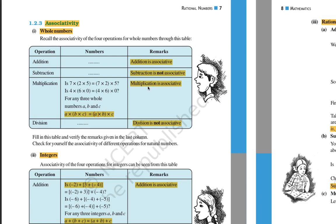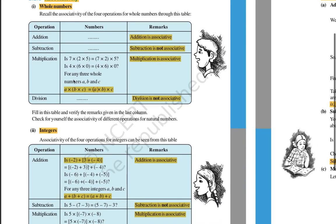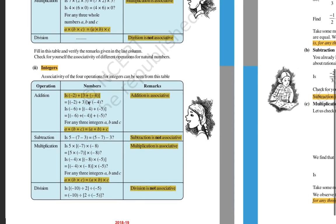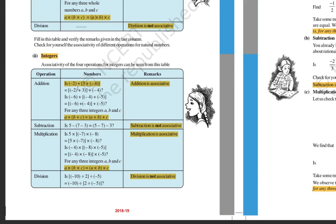For whole numbers: addition is associative, subtraction is not associative, multiplication is associative, and division is not associative. For integers, similar to whole numbers: with numbers minus 2, 3, and minus 4 — if we first add 3 and minus 4 to get minus 1, then add minus 2, we get minus 3. Changing the grouping: minus 2 plus 3 equals 1, and 1 plus minus 4 equals minus 3. Same result.